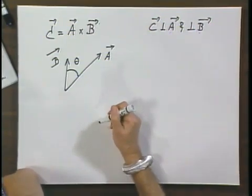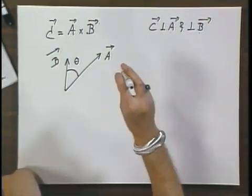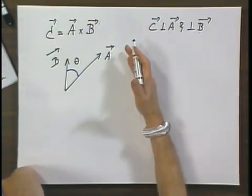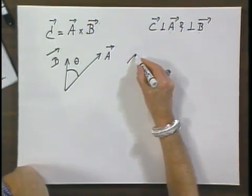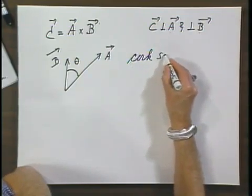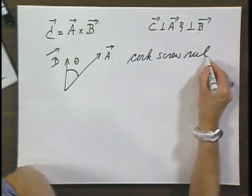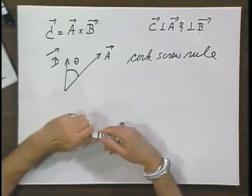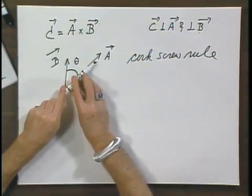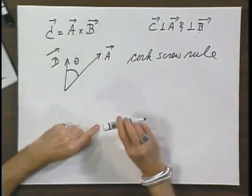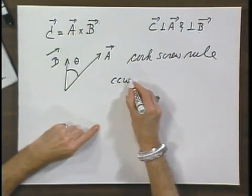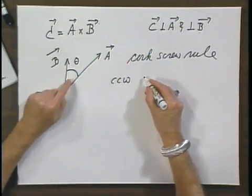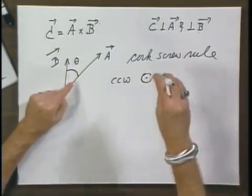I have two choices now. Perpendicular to this paper could be either out of the paper or into the paper. Now comes what I call the corkscrew rule. You rotate A over the smallest angle to B, and if that's a counter-clockwise rotation, then this vector C is coming towards me, perpendicular to the paper.